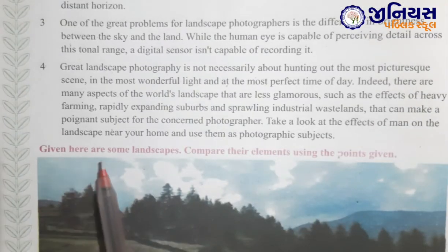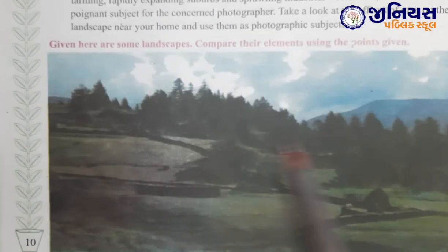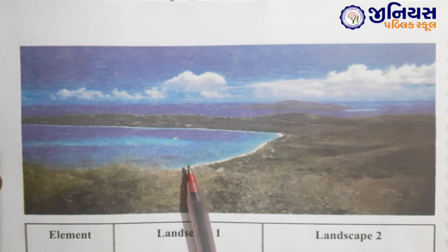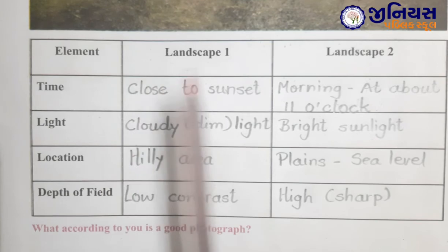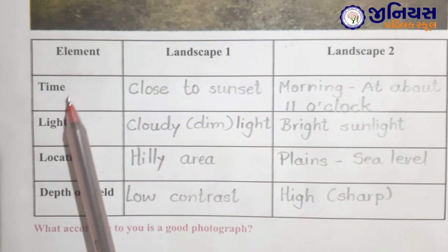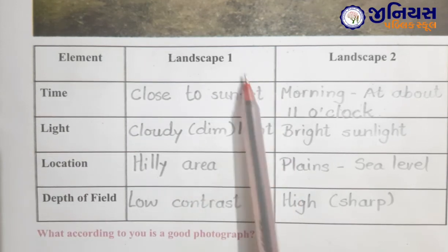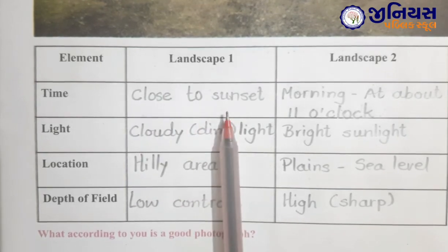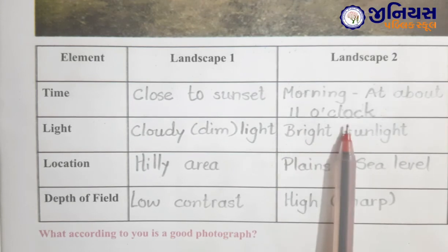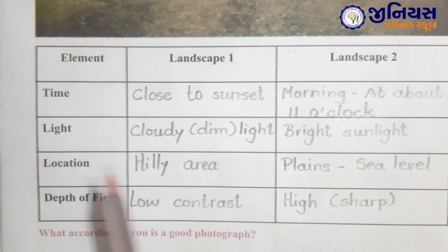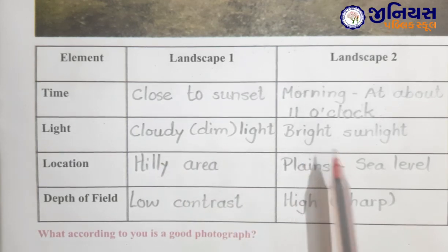Now, given here are some landscapes. Compare their elements using the points given. This is the first landscape and this is the second landscape. Here are three columns: element, landscape 1, and landscape 2. The elements are: time, light, location, and depth of field. Landscape 1 — time: close to sunset. Landscape 2 — time: morning at about 11 o'clock. Light: landscape 1 has cloudy light; landscape 2 has bright sunlight.